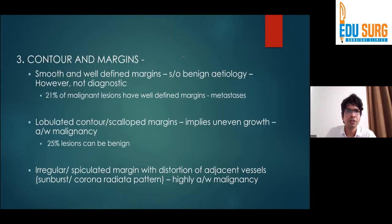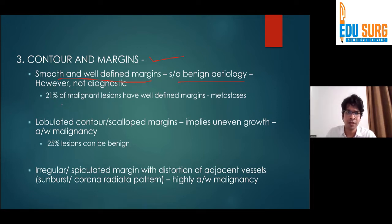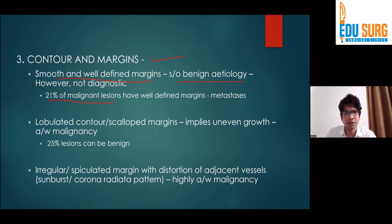Regarding contours and margins: if we have a smooth, well-defined margin, there is more likelihood of the lesion being benign, although we need to consider that around 21% of malignant lesions can also appear in a similar fashion. If the lesion is lobulated or scalloped, there are more chances of it being malignant, although again 25% of these lesions could be benign. Irregular spiculated margins indicate much higher chances of malignancy.